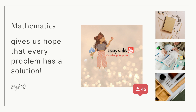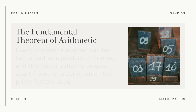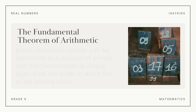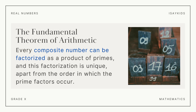In this chapter, first is the fundamental theorem of arithmetic. It states that every composite number can be factorized as a product of primes, and this factorization is unique apart from the order in which the prime factors occur.